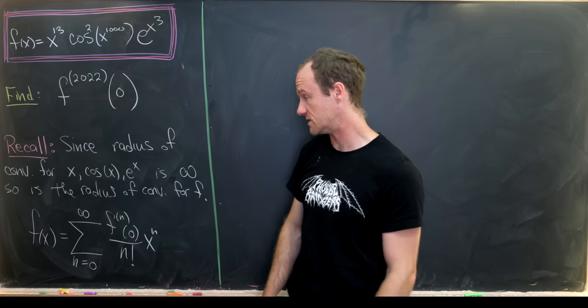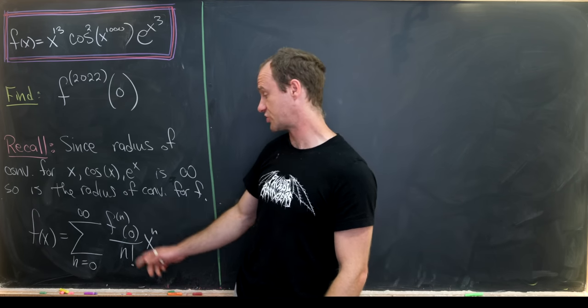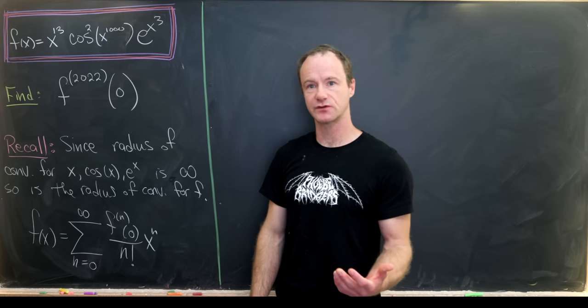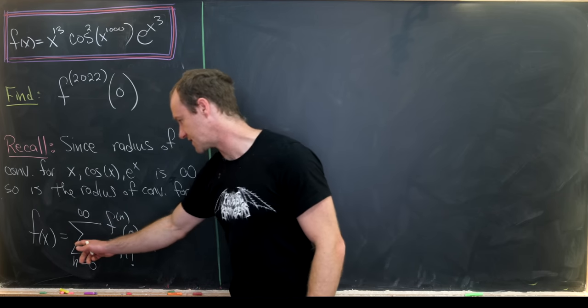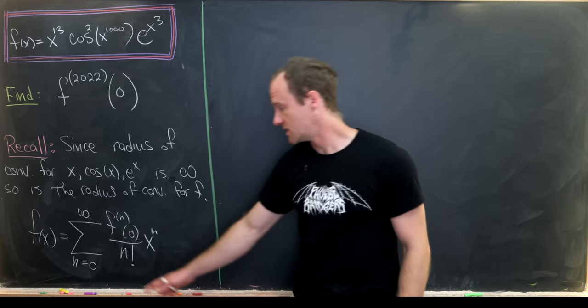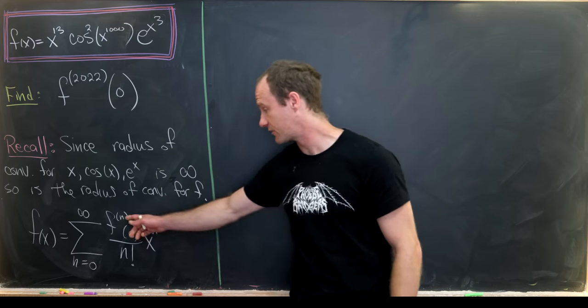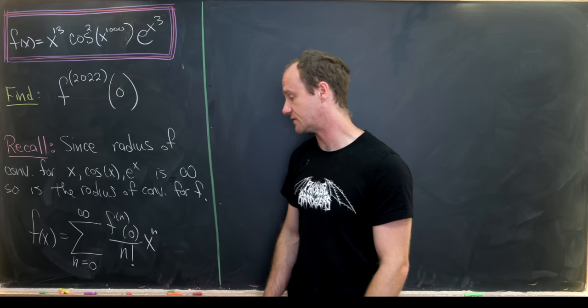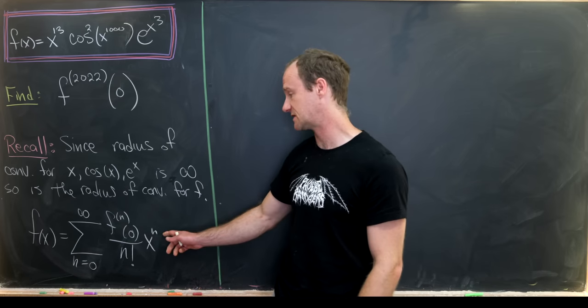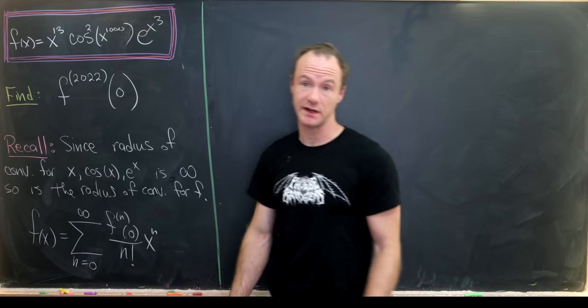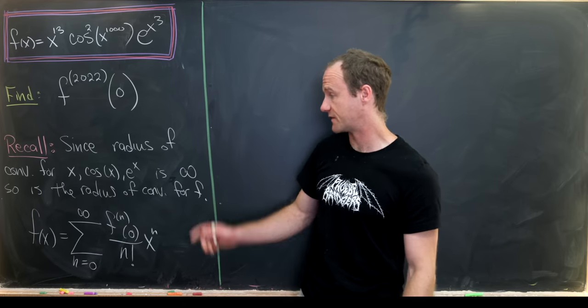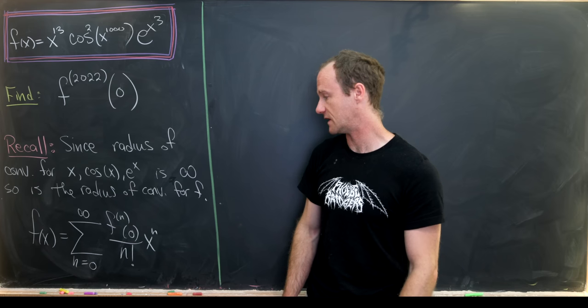So what we'll do is expand our function about zero. So let's recall that that expansion looks like this: we've got f of x equals the sum as n goes from zero up to infinity of the nth derivative of f evaluated at zero over n factorial times x to the n. And this equality holds for all x in the real numbers because we've got this radius of convergence of infinity.